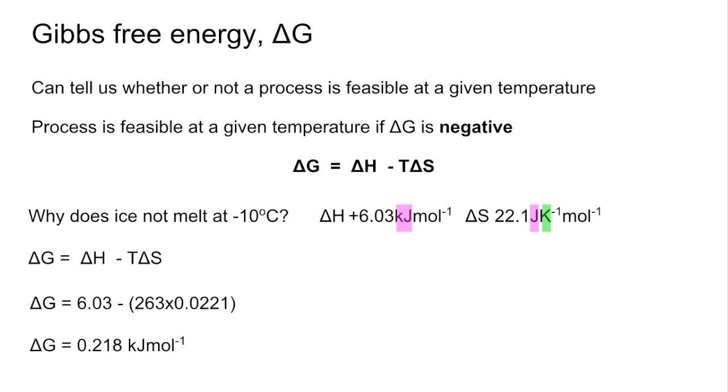So what's significant about that? Delta G is positive, so ice doesn't melt at minus 10. It's not a feasible process at that temperature.